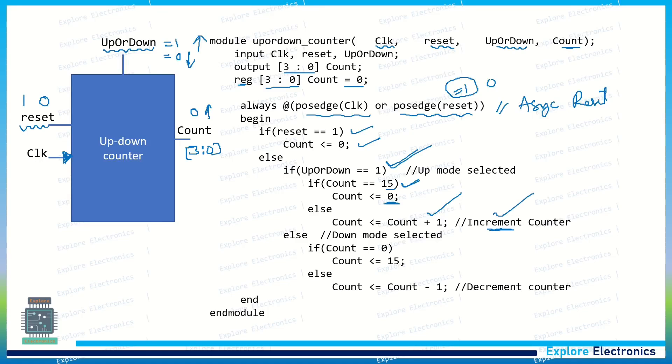When up down is equal to 1, it will increment the count. Else, when up down is equal to 0, this else part will work. If count is equal to 0, we need to assign it to 15 because from the maximum value we need to count down. Else, if it is not 0, it is in between, so count is equal to count minus 1. It will decrement the values. By using up down equal to 1 and up down equal to 0, we are operating this counter to work as an up counter as well as a down counter.